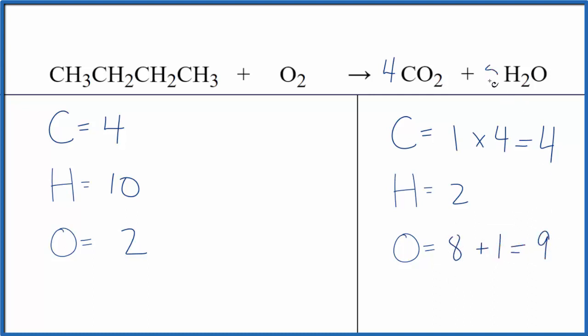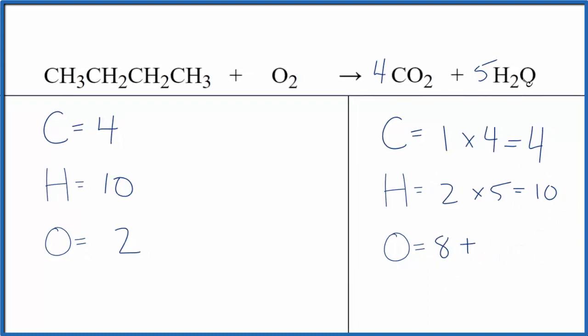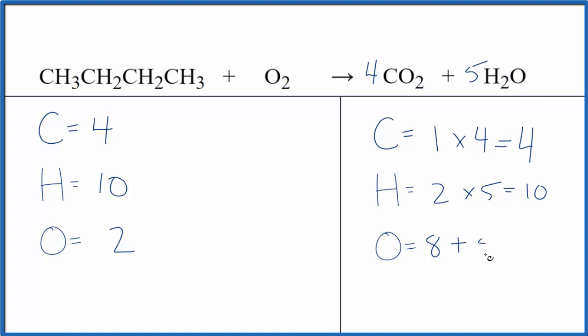Let's put a 5 in front of the H2O. 2 times 5, that gives us 10. So we balance the hydrogens. Update the oxygens again: 4 times 2 is 8 plus 5 times 1, that's 5. So we have 13 oxygen atoms.